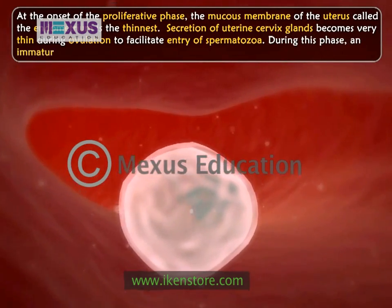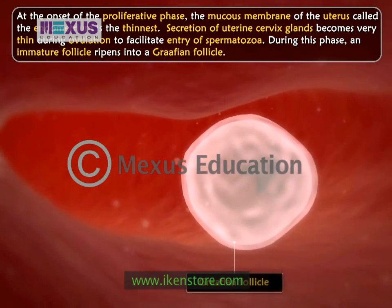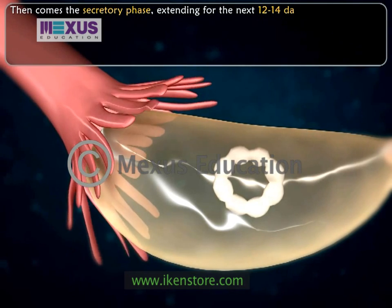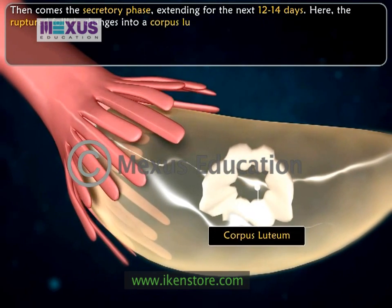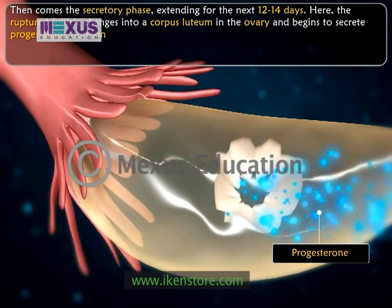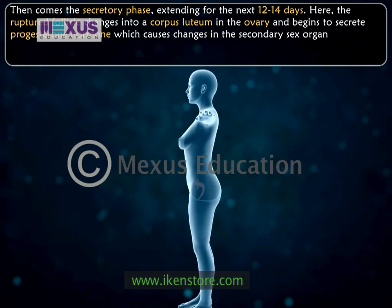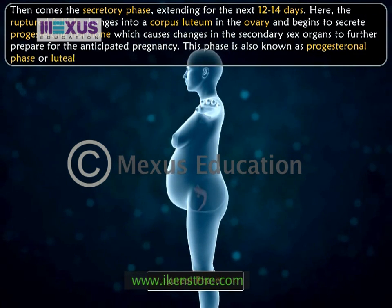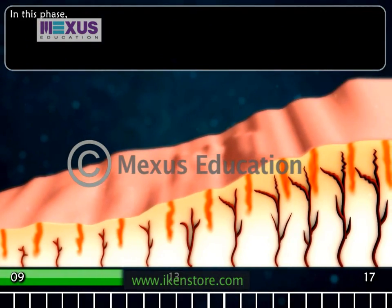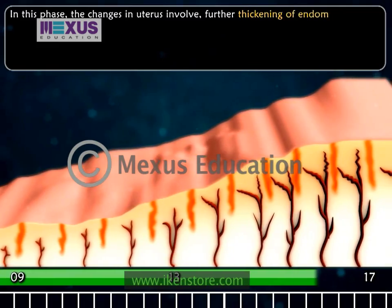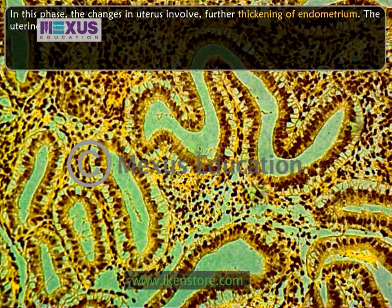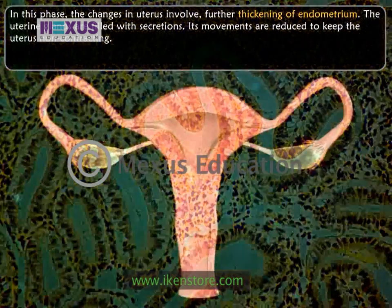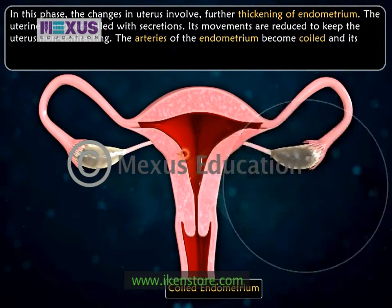During the proliferative phase, an immature follicle ripens into a Graafian follicle. Then comes the secretory phase, extending for the next 12 to 14 days. Here the ruptured follicle changes into a corpus luteum in the ovary and begins to secrete progesterone hormone, which causes changes in the secondary sex organs to further prepare for the anticipated pregnancy. This phase is also known as the progesteronal phase or uterine phase. In this phase, changes in the uterus involve further thickening of the endometrium. The endometrium glands are filled with secretion and its movements are reduced to keep the uterus non-contracting. The arteries of the endometrium become coiled and its glycogen content increases.